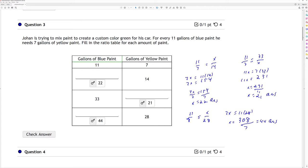Then the next one there I have 11 is to 7, as 33 is to x. And I cross multiply and divide. 7 times 33 is 231, divide it by 11. x is 21.